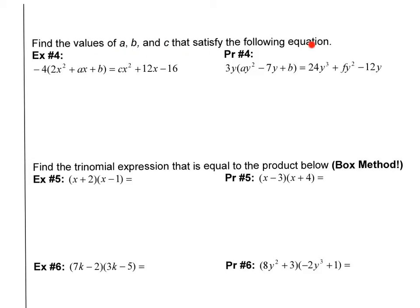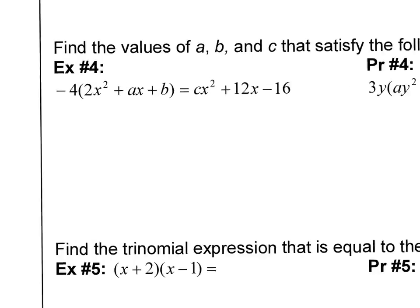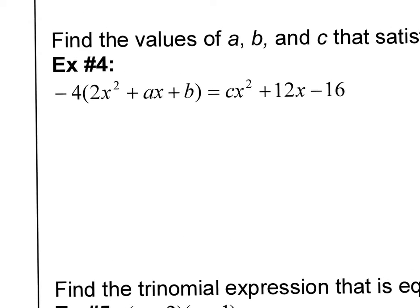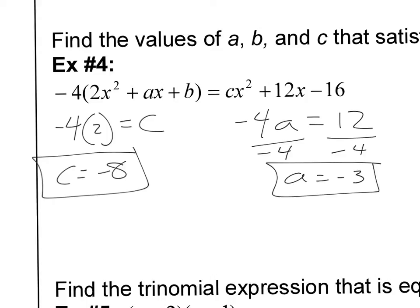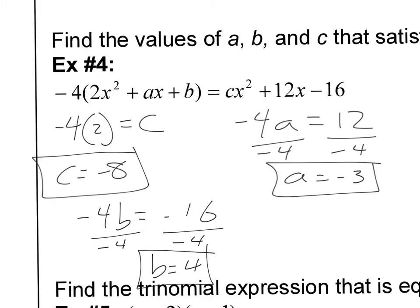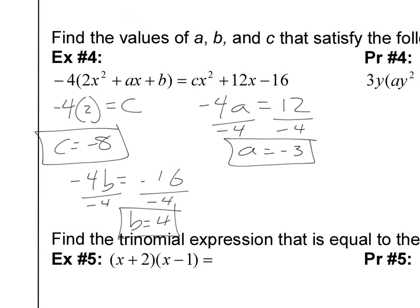Find the values of A, B, and C that satisfy the following equation. I'm just going to go left to right. I know that negative 4 times 2X squared should equal CX squared, so negative 4 times 2 equals C, meaning C is negative 8. Next, negative 4 times A should equal 12, so negative 4 times A equals 12, and A must be negative 3. Lastly, negative 4 times B equals negative 16. Divide by negative 4 and B must be 4. I simply broke it up into three different equations and solved.